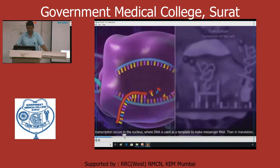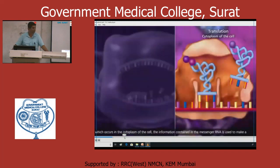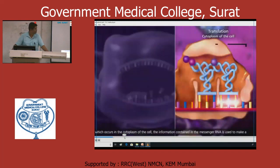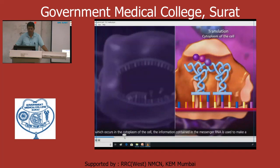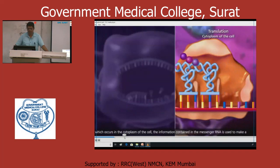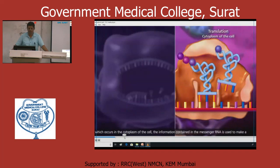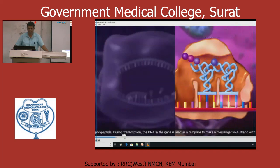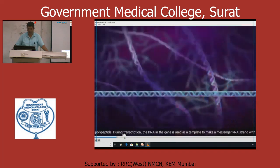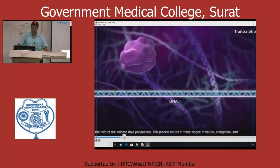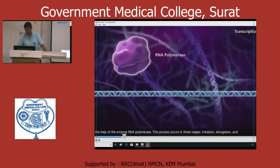Translation occurs in the cytoplasm of the cell. During transcription, the DNA in the gene is used as a template to make a messenger RNA strand with the help of an enzyme. We have completed the transcription.